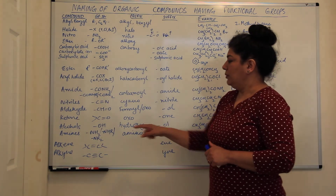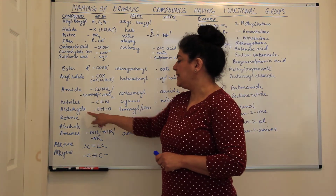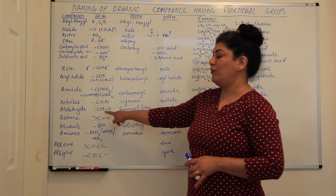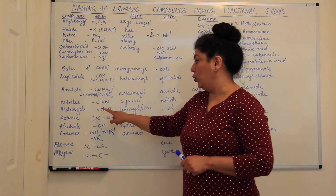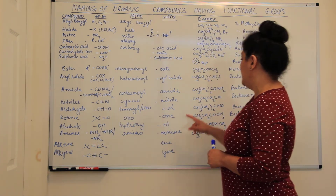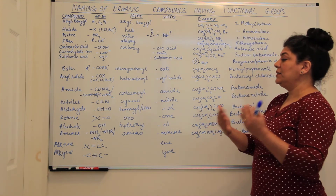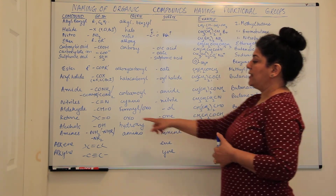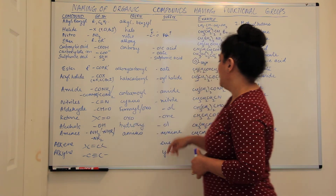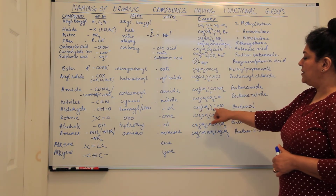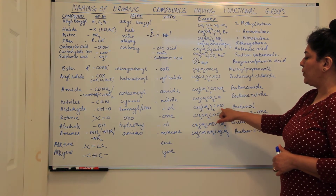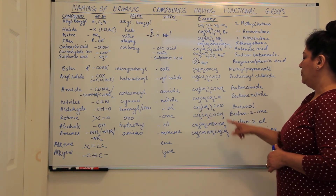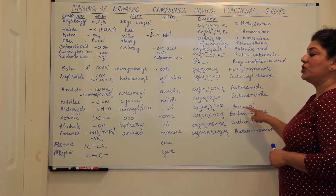Next we have aldehydes. Aldehydes are represented by the suffix 'al'. The formula is CHO. This is also a terminal group — it is always present on the last carbon because it has only one free site. For example, CH3CH2CH2CHO: the first carbon, two, three, four — it is butanal.